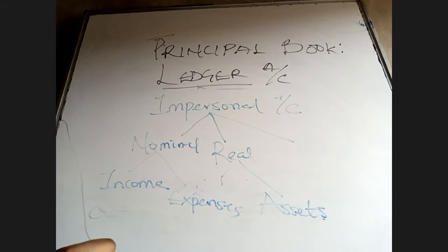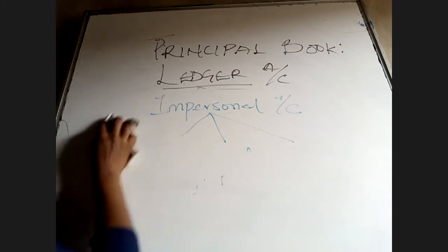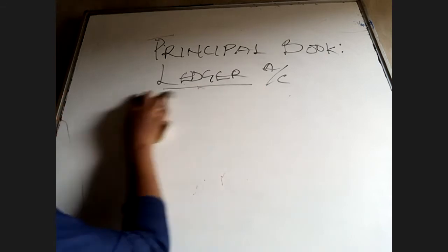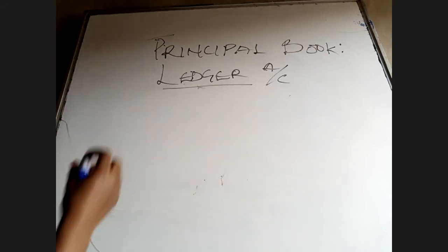Here is the thing when it comes to ledger accounts. As much as possible I want to make it very simple and comprehensive. Here are our rules of postings - we say double entry: you debit what, and credit what?